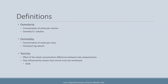Before talking about specific fluids, it's important to review some common definitions or terms used to describe fluids. First, osmolarity refers to the concentration of solute per volume, with the unit being osmols per one liter of solution. Next is osmolality, which is the concentration of solute per mass, with the unit being osmols per one kilogram of solvent.